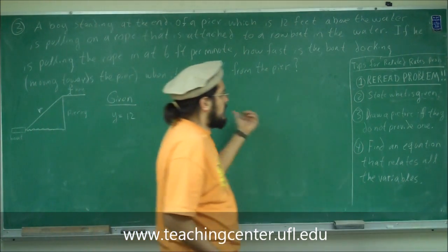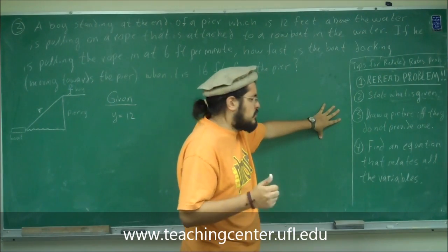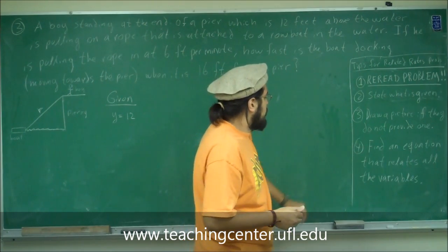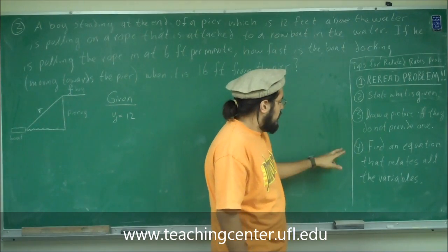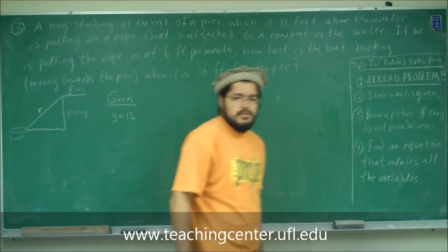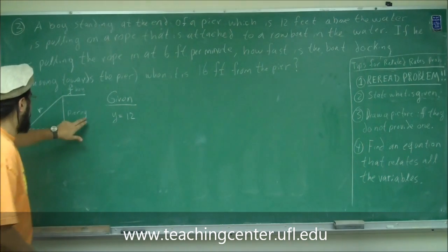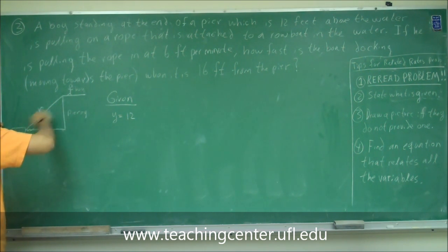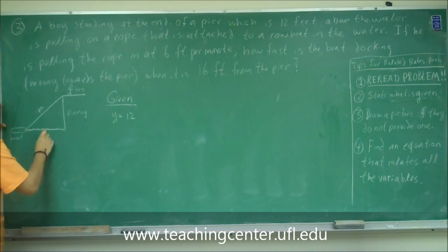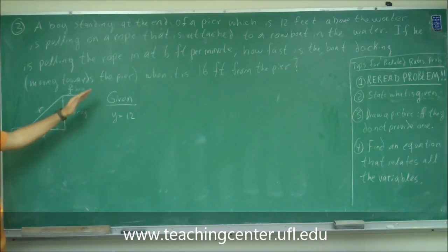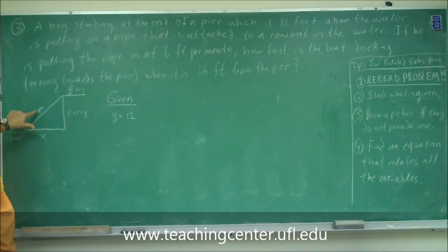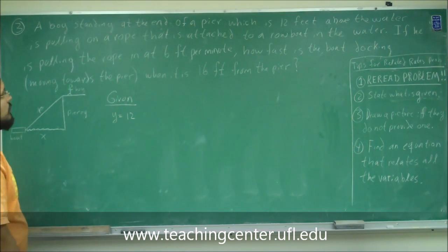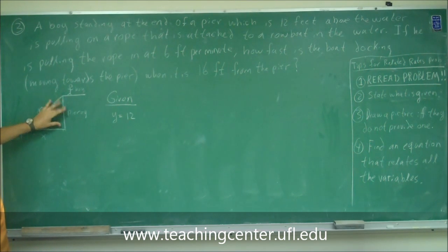Always draw it — it's very important so that you get to see it. And finally, number 4: find an equation that relates all the variables. So I'm putting Y as the pier. Since this looks like a triangle, I'm going to call this R — the hypotenuse of the triangle — and I'm going to call this X. So everything now has a variable: Y, R, and X. We already know Y equals 12, which is the distance from the water to the pier.